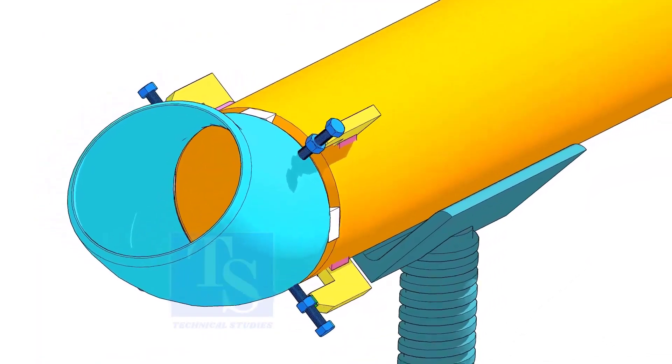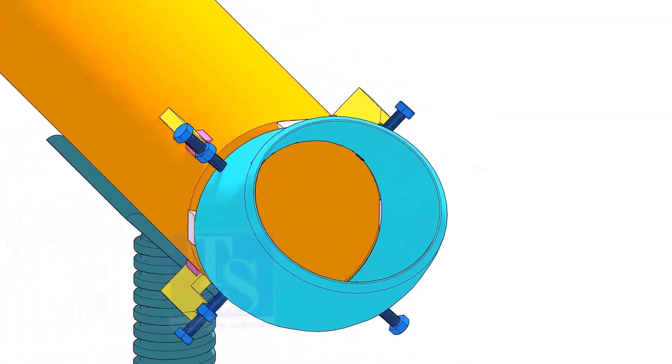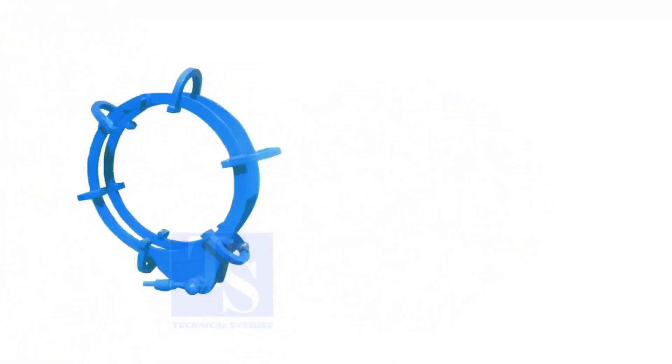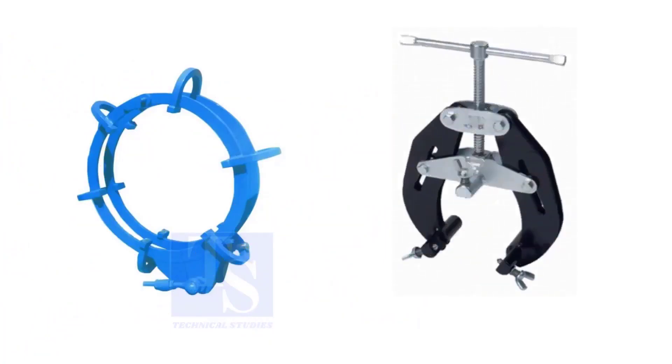Pipe aligning clamps are the most important tool for pipe fabrication, but are costly and need different sizes according to the size of the pipes. To overcome these disadvantages, we can use jack bolts. I will show you how to make a jack bolt.